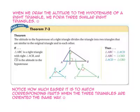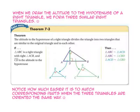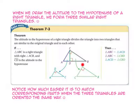When we draw the altitude to the hypotenuse of a right triangle, we form three similar right triangles. Let's take a look at theorem 7-3. The altitude to the hypotenuse of a right triangle divides the triangle into two triangles that are similar to the original triangle and to each other. Notice how it is much easier to match the corresponding parts when the three triangles are oriented the same way.